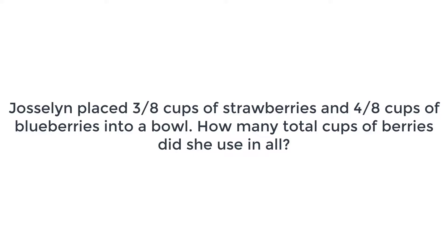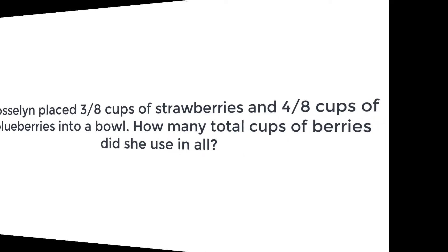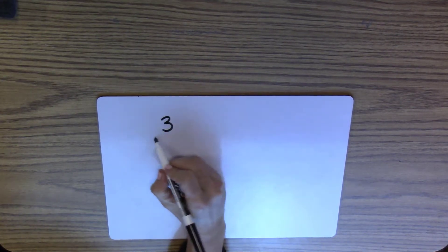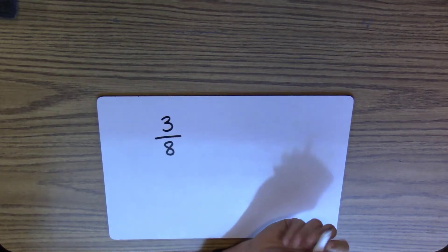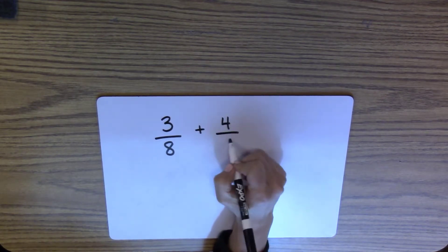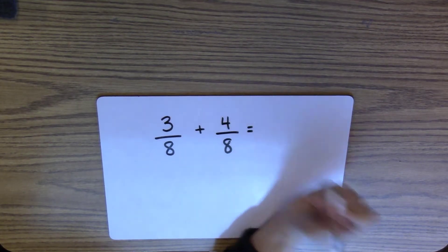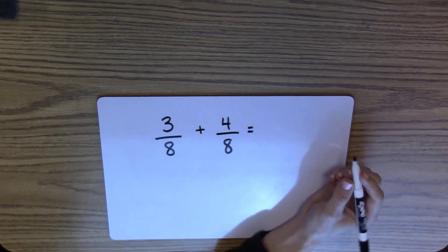To solve this problem, I notice the question asks how many cups of berries did she use in all. I know that the operation I need to use is addition. I will write the equation 3⅛ cups of strawberries plus 4⅛ cups of blueberries to find the sum, total cups in all.